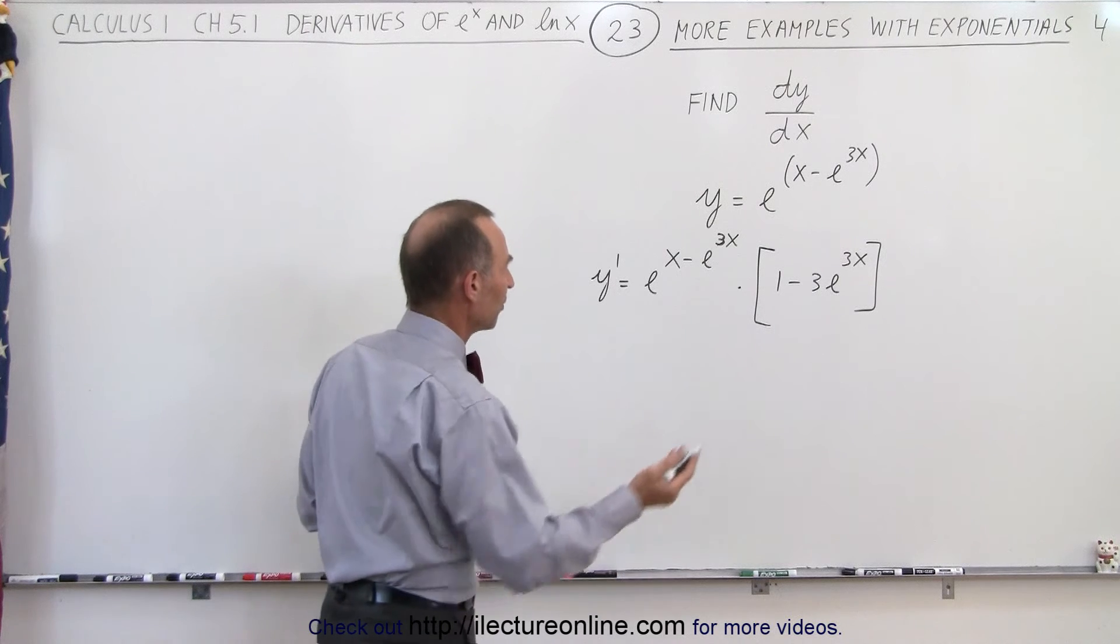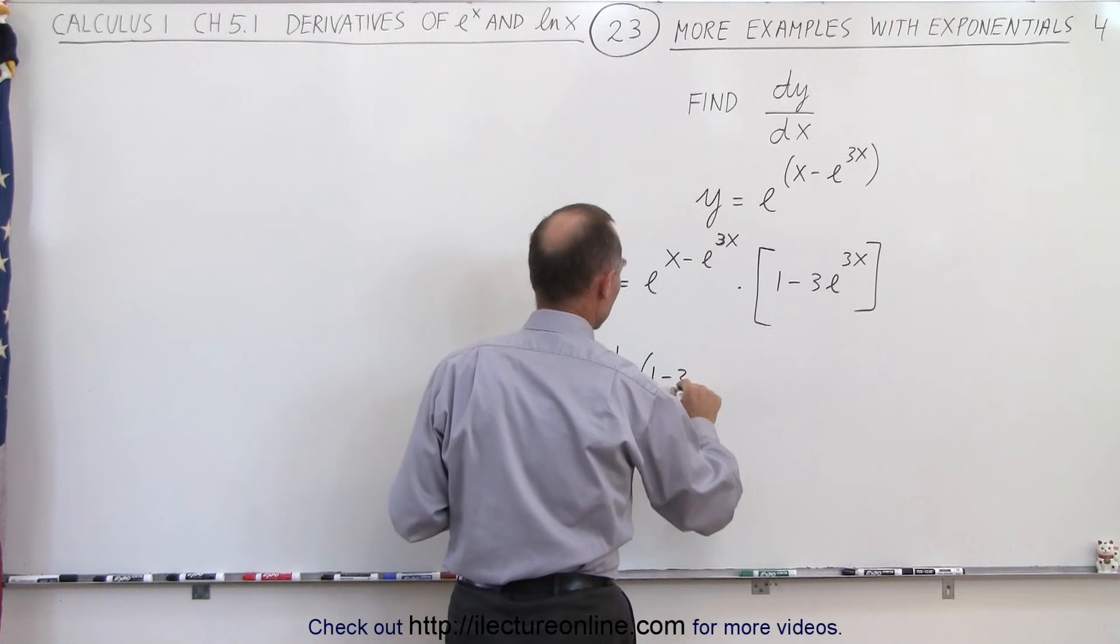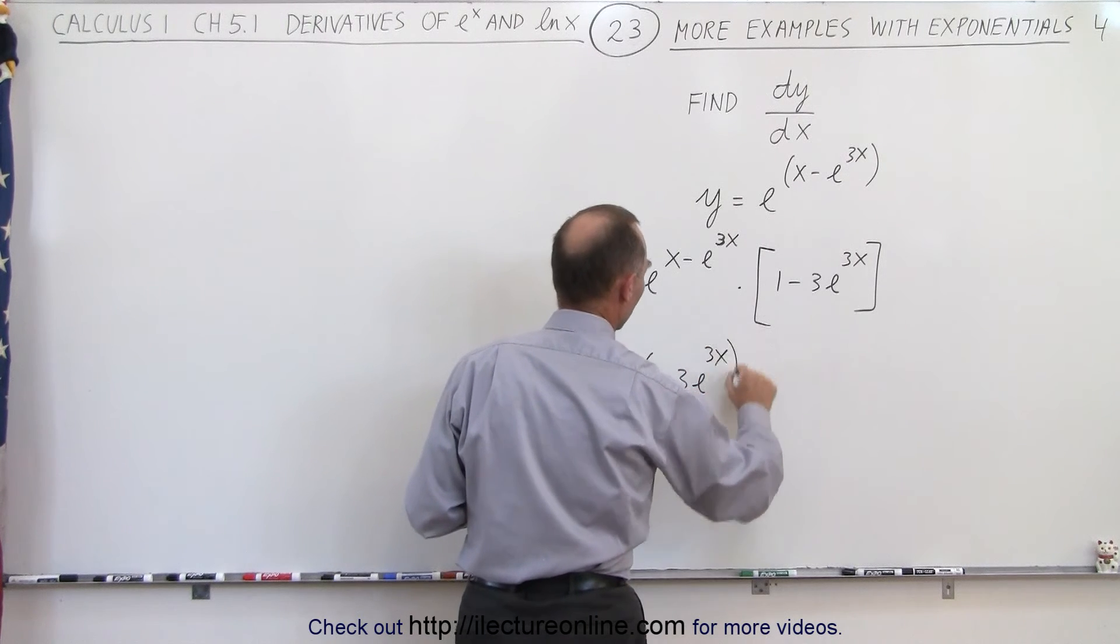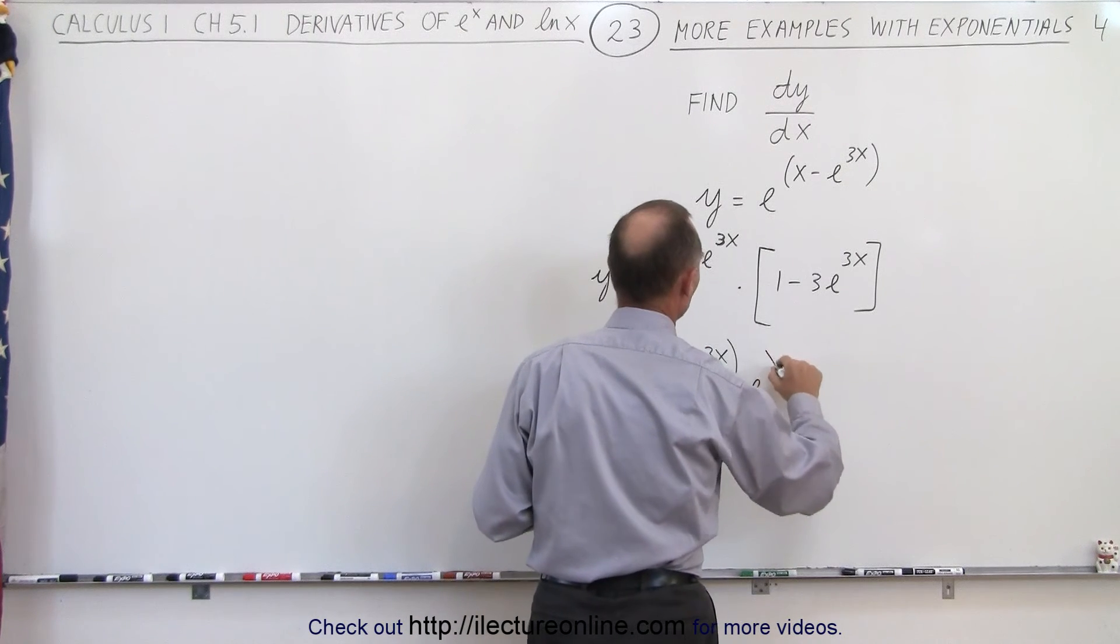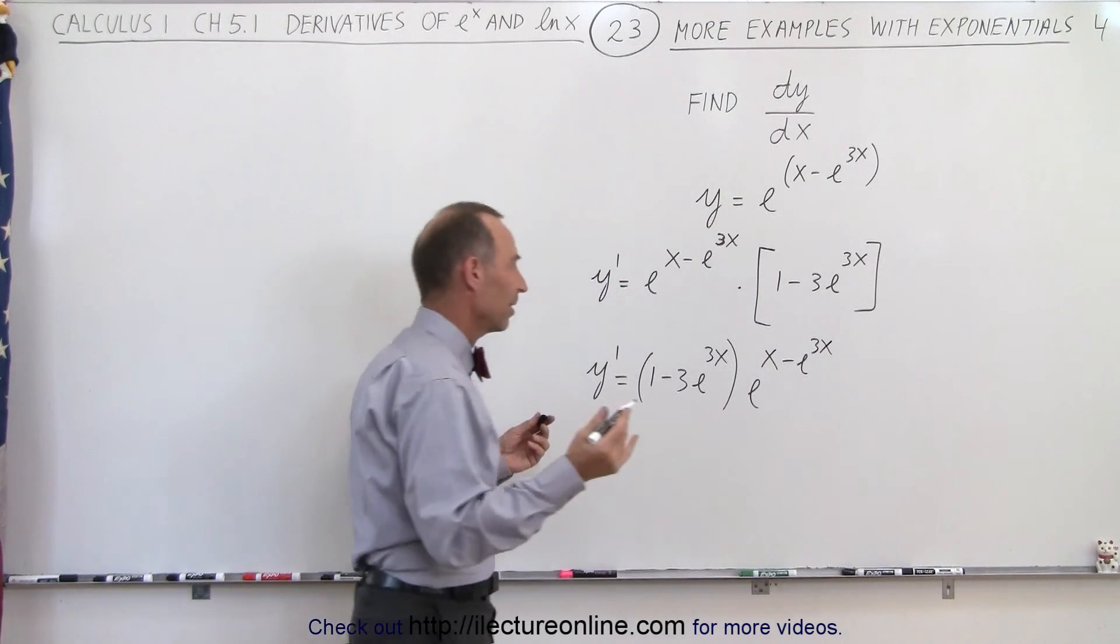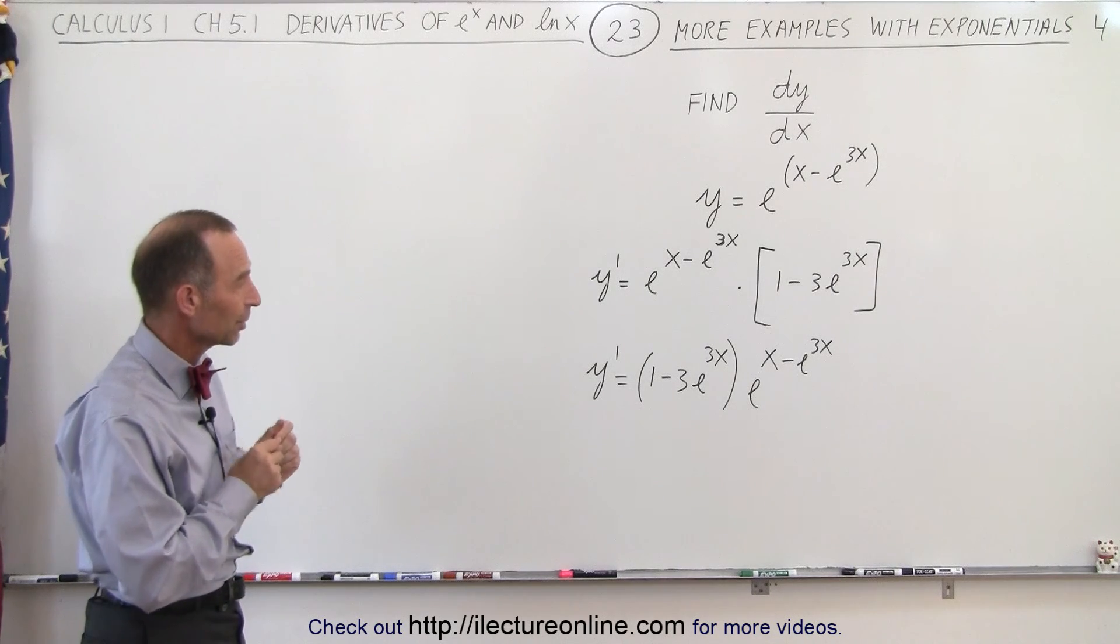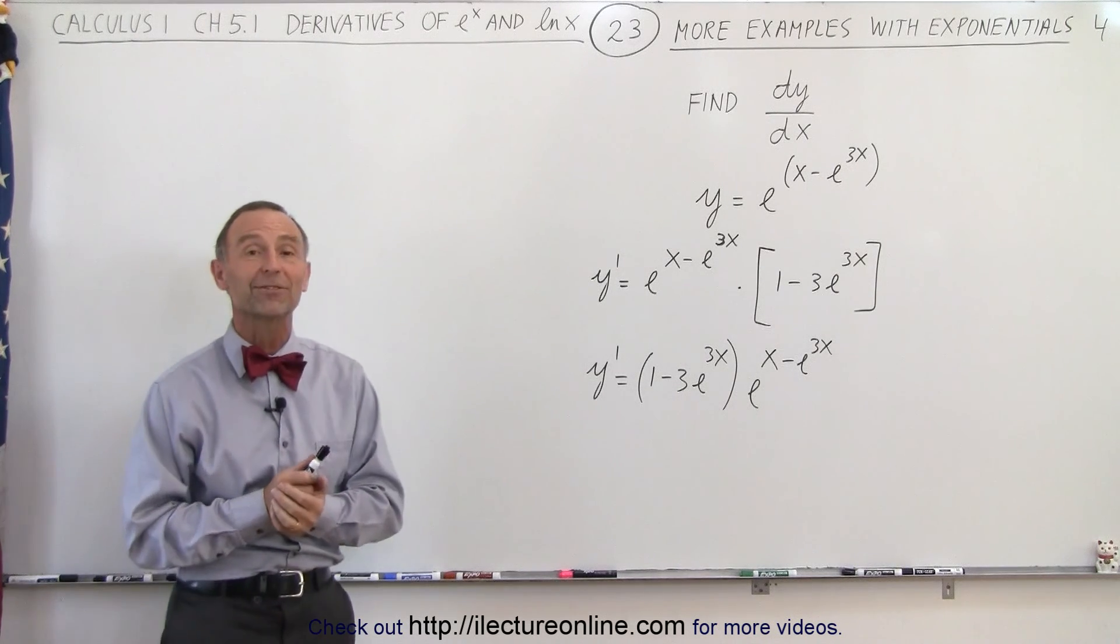And so then when we put that together, we say y prime is equal to the quantity 1 minus 3 e to the 3x, multiply times e raised to the x minus e to the 3x power. And see, that's all there is to it. Whoa yes, that's exactly how we do it. So that's the right answer.